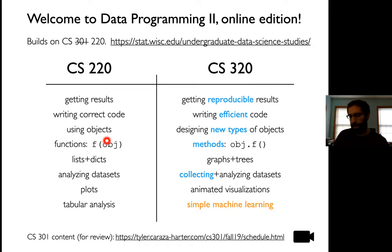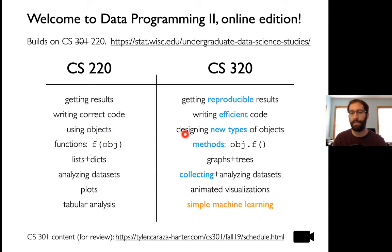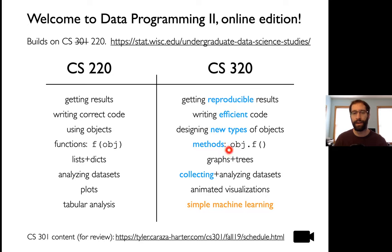In CS220, we learned how to use objects of various types — maybe lists or dictionaries. Here, we're going to take it to the next level and learn how to make new types of objects from scratch. For example, a lot of data in the real world can be represented by a graph. A social network has nodes and edges — how can we create new types that deal with that? When we're creating new types, instead of regular functions like in CS220, we're going to be creating our own methods. We called lots of methods in 220; we never wrote our own. We're going to be doing that now.